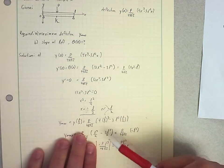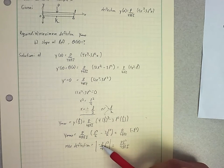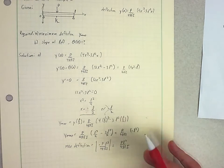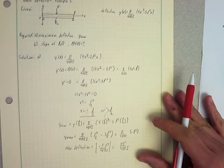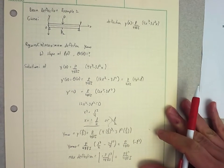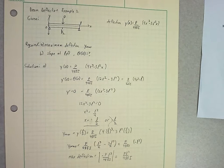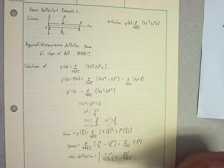And so I could rewrite that as negative P times L cubed over 48 EI. But when I'm talking about maximum deflection, I don't really care what direction it's going in this case.